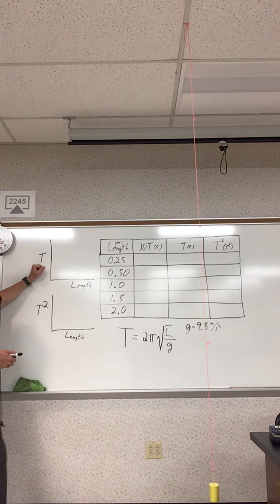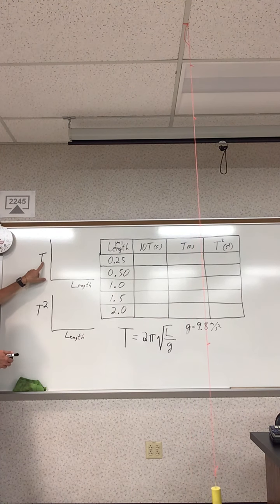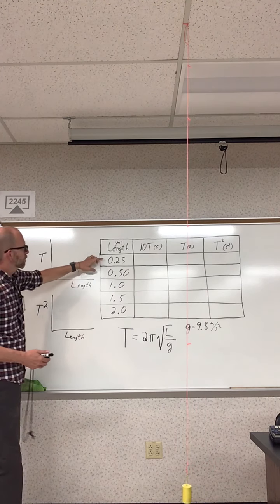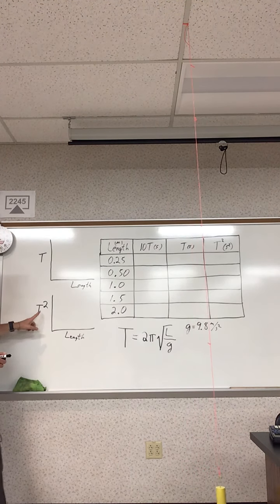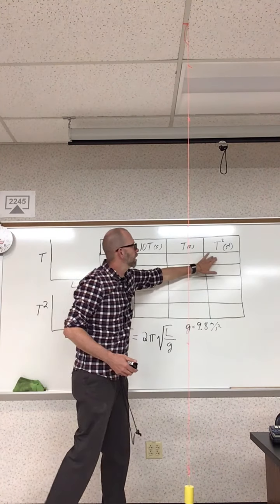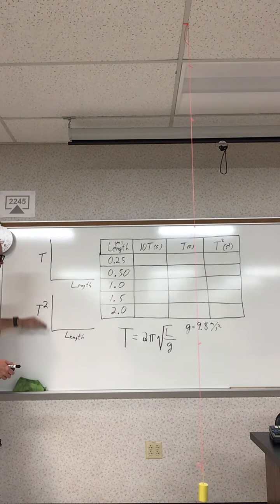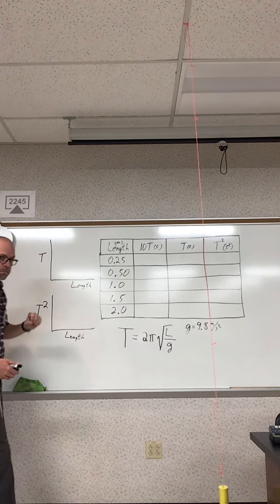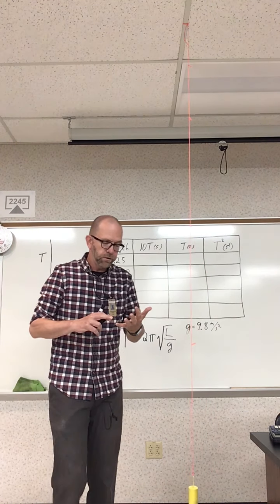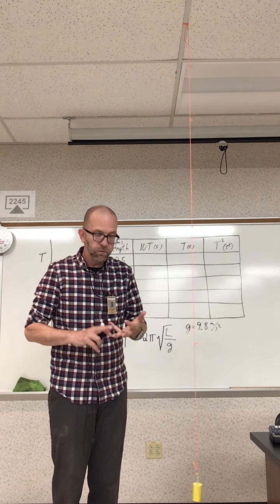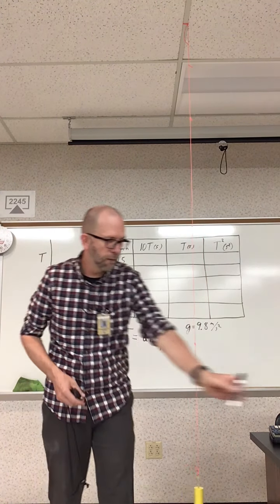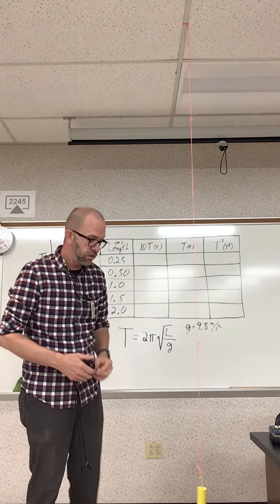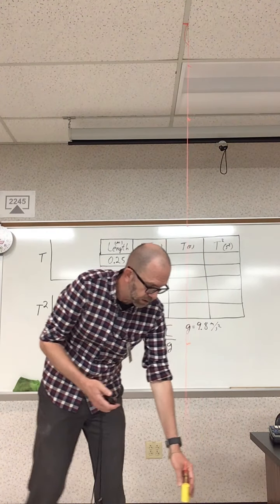What you're going to do is graph period versus length—quarter, half, one, one and a half, and two meters. Then you're going to figure out what the square of the period is and graph period squared versus length. You're going to plot the points, draw a best fit line, find the slope, and give me the equation of the line with the units on that slope.